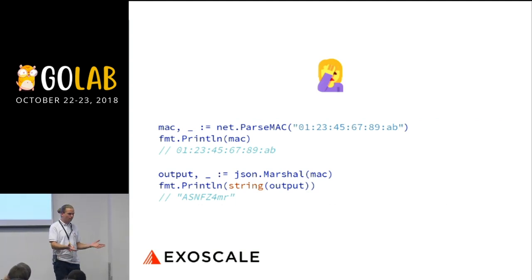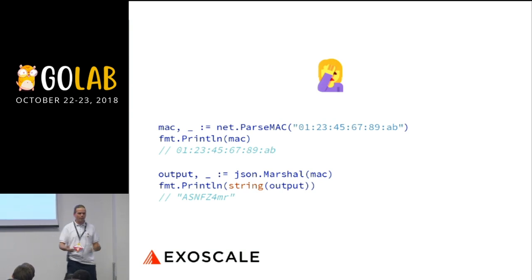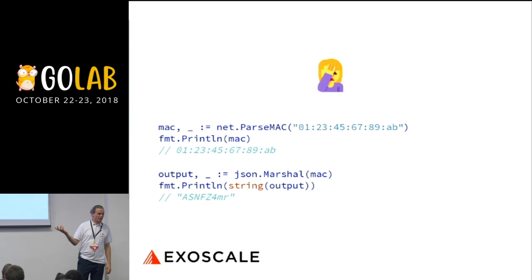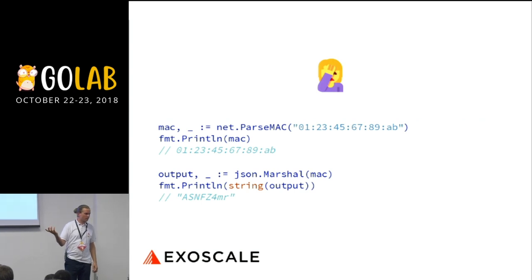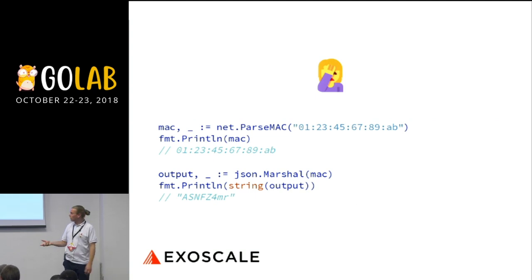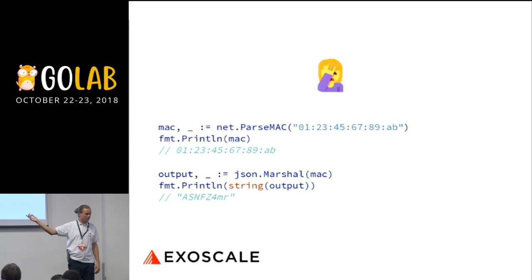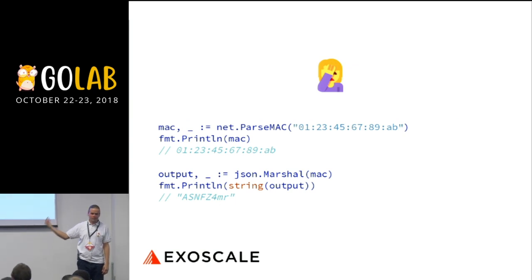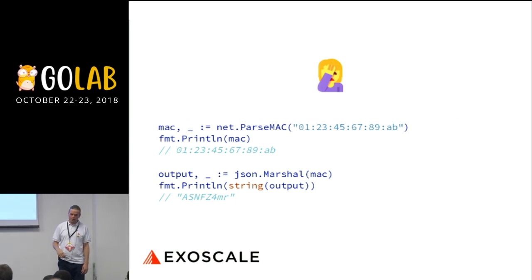Another thing from the API. If you parse JSON, there is this strange thing: you parse the MAC address, you get this type from the Go standard library, and then you encode it in JSON, and it gives that string back. You don't have the MAC address anymore.